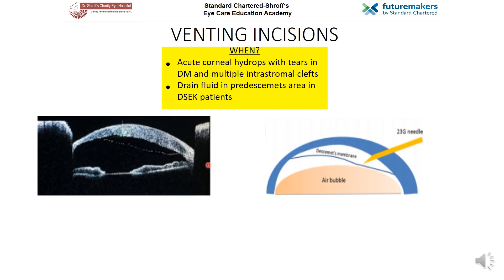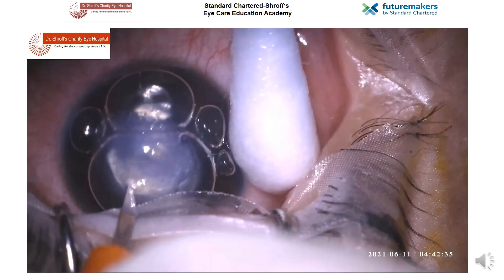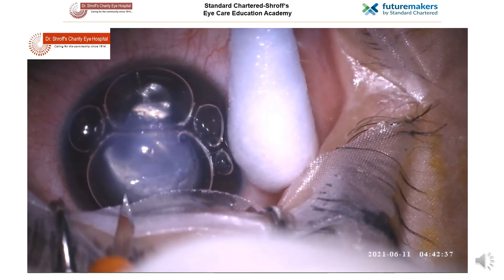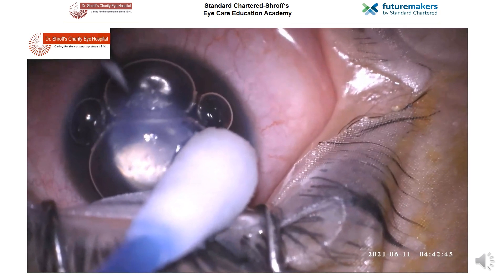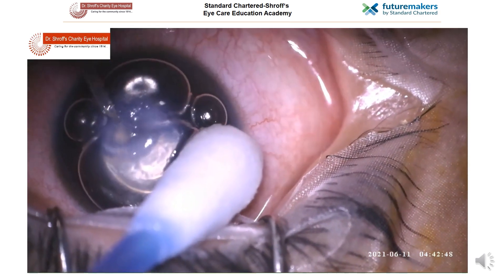Venting incisions are openings made in the corneal stroma to release fluid. They are used in cases of acute corneal hydrops with tears in the Descemet's membrane and multiple intrastromal clefts, and also to drain fluid in the pre-Descemet's area in patients with a defect. A 23-gauge needle, microkeratome, or MVR blade is inserted at the highest point of the detached Descemet's membrane to make stab incisions. ASOCT can be used as a guide. The needle should be stopped as soon as it penetrates the stroma or at the first egress of fluid. The patient is then asked to lie supine for 10 minutes, after which air can be injected through the initial incision.